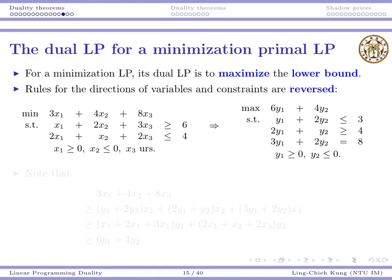Now let's discuss how to find a dual program for minimization problems. For minimization problems, the dual LP is used to maximize the lower bound — we look for a lower bound and solve a linear program to maximize it. The rules for the directions of variables and constraints need to be reversed, because now we need lower bounds. Previously, to find upper bounds, we maintained less than or equal to throughout; now, to find lower bounds, we maintain greater than or equal to throughout. You may want to derive the rule by yourself.